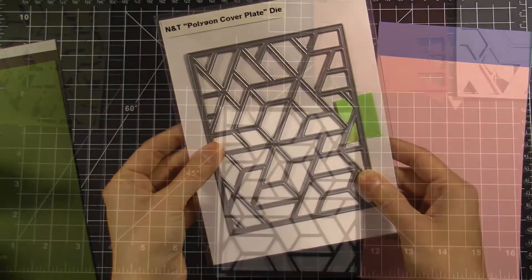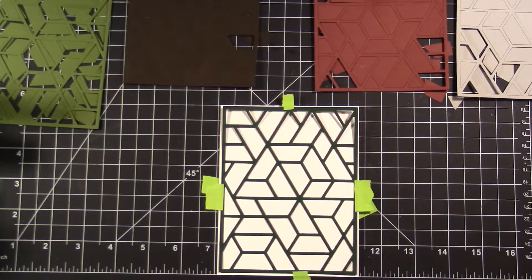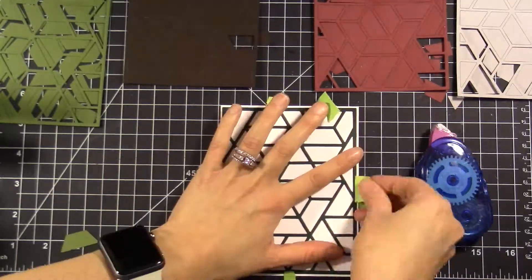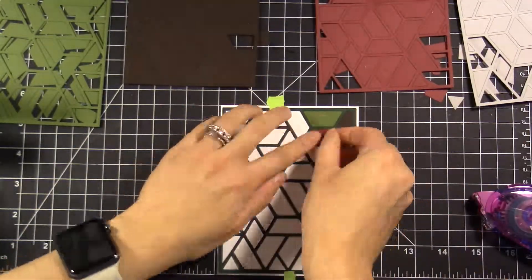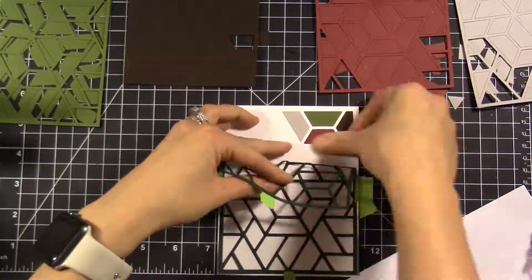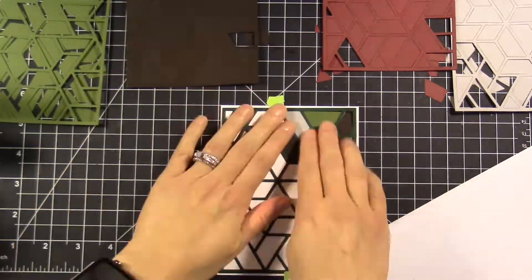I'm also using the Neat and Tangled polygon cover plate die, and that's going to be the focus of my card. What I've done is I've run this cover plate through with green paper, red paper, brown paper, and gray paper. What I'm doing is taking pieces from each of the different colors and applying them onto my card front.